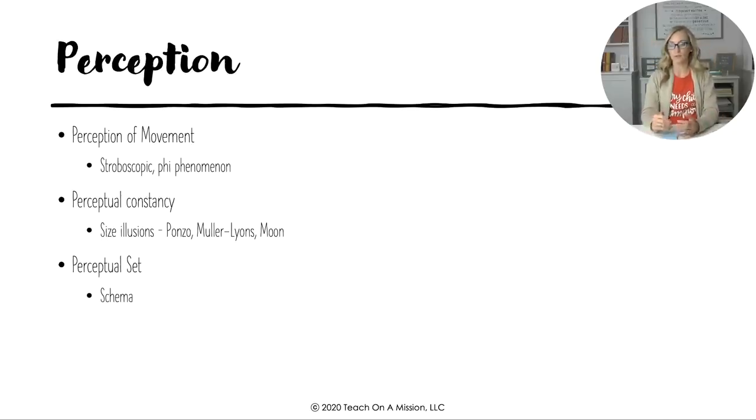And then there's the illusions like the Ponzo, Mueller-Lyer, and Moon illusion, making sure that you understand how depth cues especially are used really in all of these to totally throw our brains off and make us perceive depth in incorrect ways.